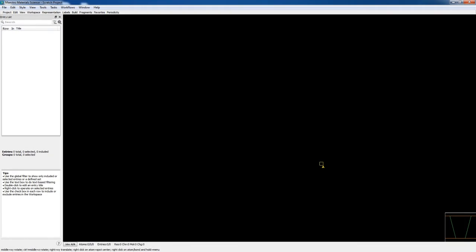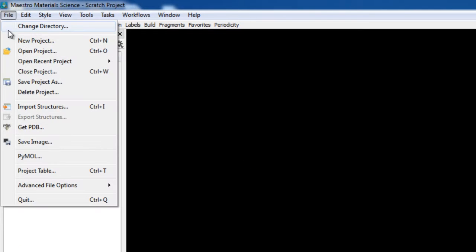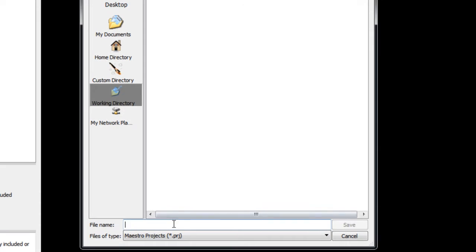So let's begin here in the material science suite. Let's create a new project by going to file, new project. We'll call it MCP derivatives, then save.